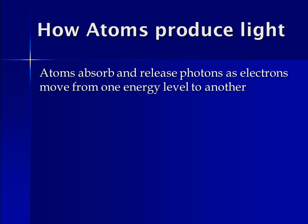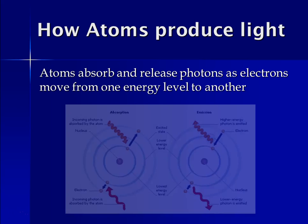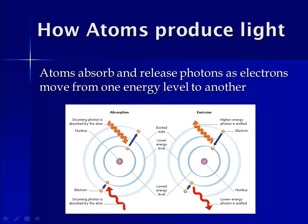How do atoms produce light? Atoms produce light when they absorb and release energy in the form of photons, as electrons move from one energy level to another. If incoming light is the right frequency, the electron can absorb it and jump to a higher energy level. For example, an electron can jump from n=1 to n=3, or from n=2 to n=3. Eventually that electron relaxes back down and emits the same frequency of energy.